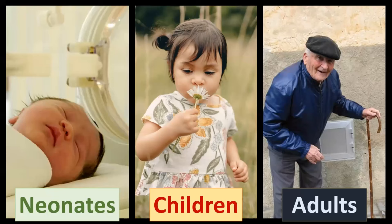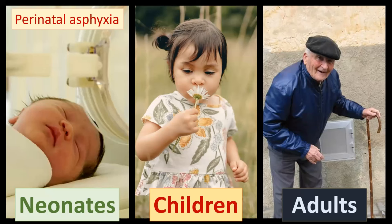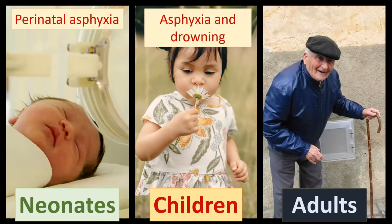Hypoxic ischemic encephalopathy can occur at all ages, but the causes differ. In neonates, hypoxic ischemic events are generally the result of perinatal asphyxia, which can have many causes: difficult childbirth, strangulation by an umbilical cord, and so on. In children, the main causes are asphyxia and drowning. In adult patients, the main reason is a cardiac arrest.